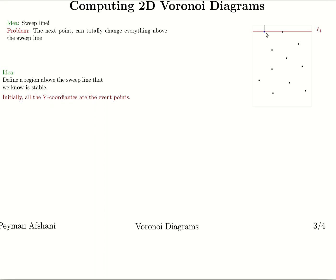Every point encountered above the sweep line defines a parabola, which is the bisector of that point and the sweep line. Initially the bisectors are just line segments going to infinity, but as the sweep line moves downwards the bisectors open up. The first event point is the point with the highest Y coordinate, giving one bisector that's just a vertical line. At the next event point the first bisector has opened up, and the new bisector is again a vertical line. By the third event point, both earlier bisectors have opened up and the third bisector is a new vertical line.